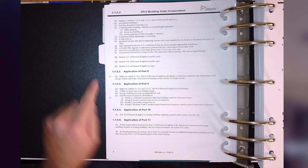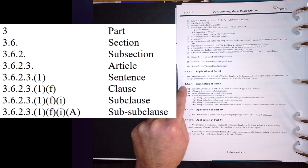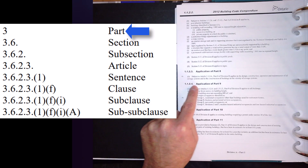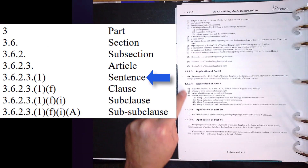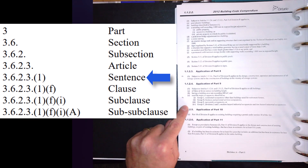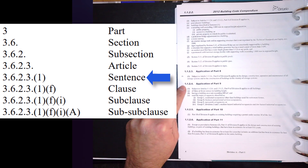When looking through the Ontario Building Code, you'll find that the first four levels — from part all the way to article — are always written together on the same line. Whereas the remaining levels, starting with sentence, are always listed vertically, one under the other.